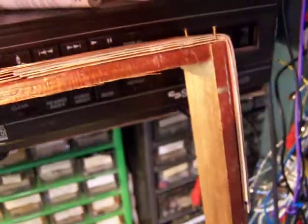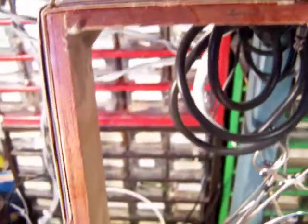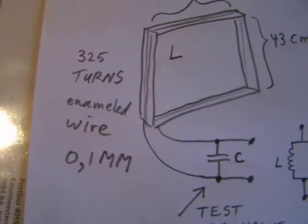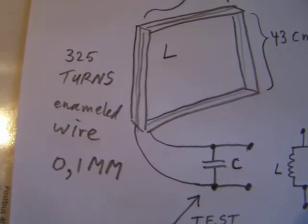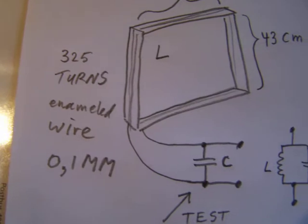Here you see how I've built the first stage of this coil. This is the coil here — it's made from wood. It's 43 centimeters on all sides, and over that I've wound wire from animal wire of 0.1 millimeter.